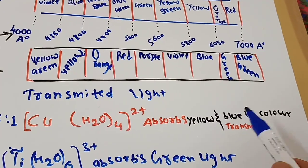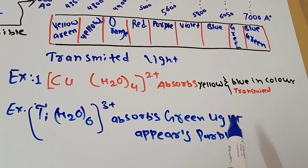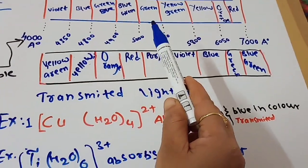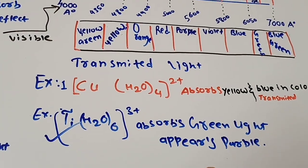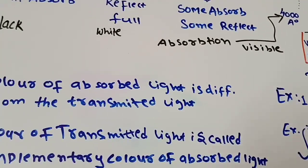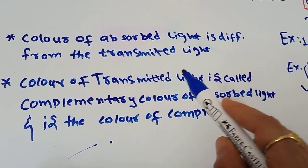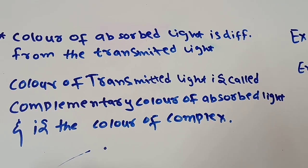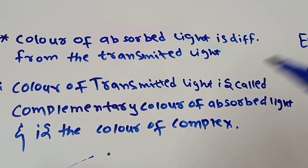The transmitted light is blue for the copper complex because the complementary color of yellow is blue. A second example: Ti(H₂O)₆³⁺ absorbs green light and appears purple, because the complementary color of green is purple. The color of the transmitted light is called the complementary color of the absorbed light, and it is the color of the complex.